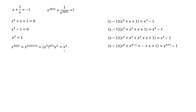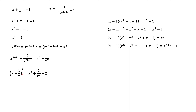To find x² + 1/x², we square x + 1/x. Squaring x + 1/x gives x² + 2 + 1/x², and we know that x + 1/x equals −1. So squaring gives 1, which means x² + 1/x² = 1 − 2 = −1. Therefore, x to the power of 2021 plus 1 over x to the power of 2021 equals minus 1.